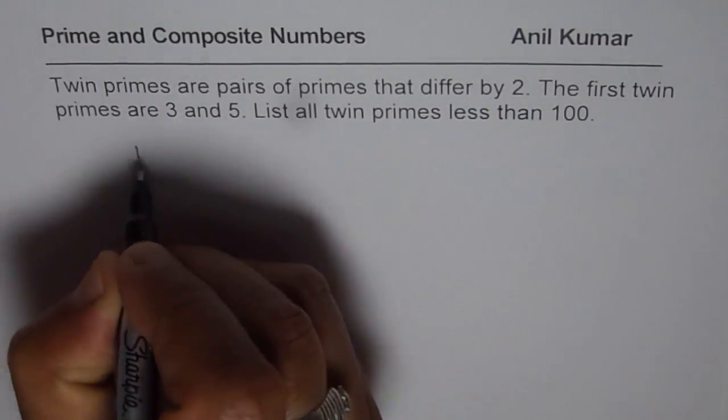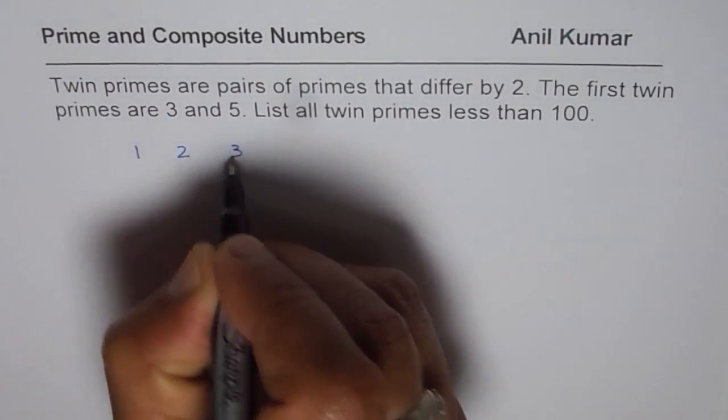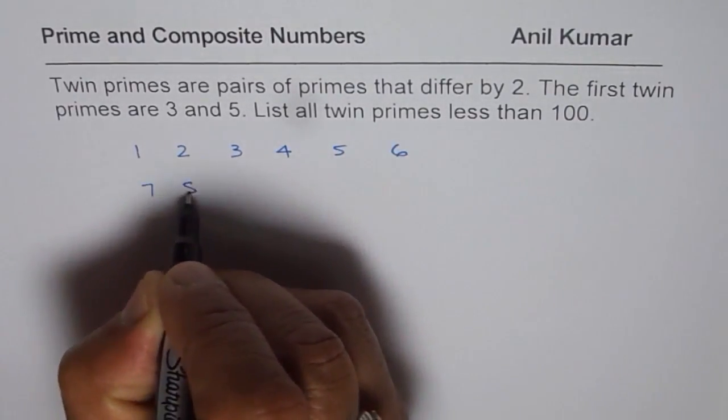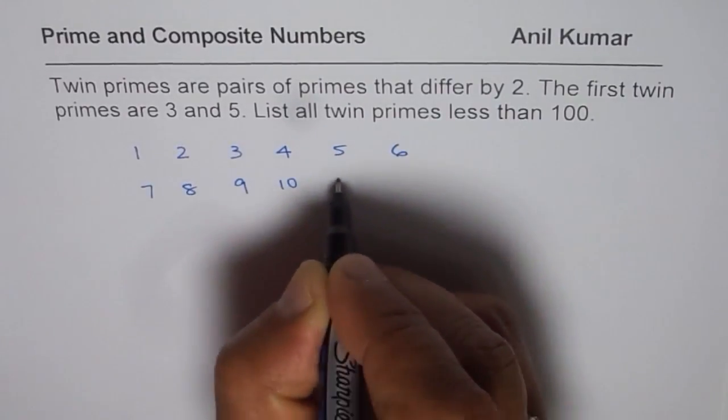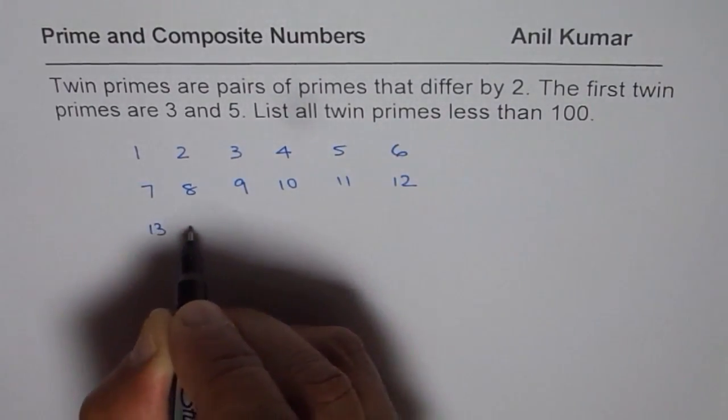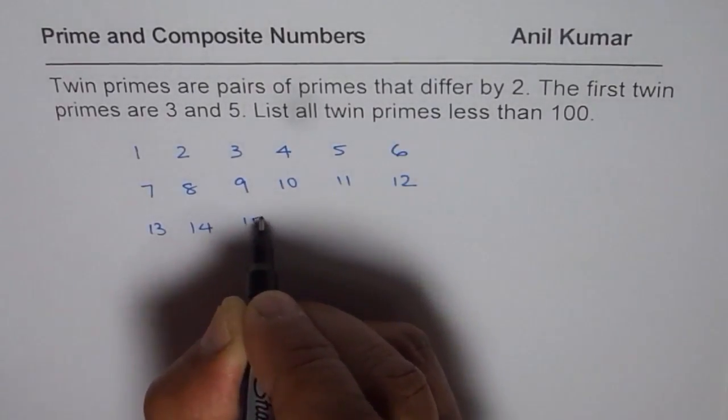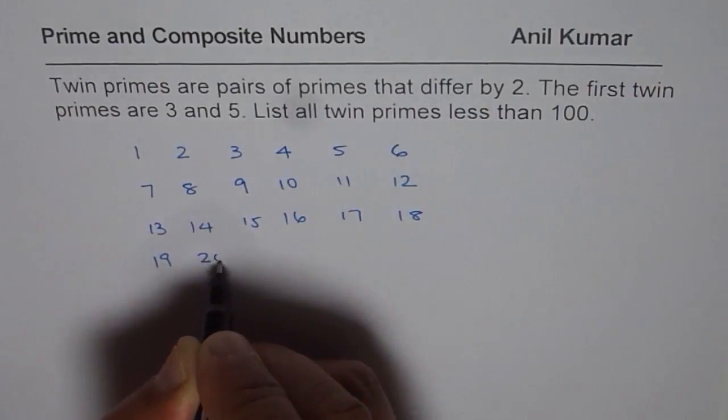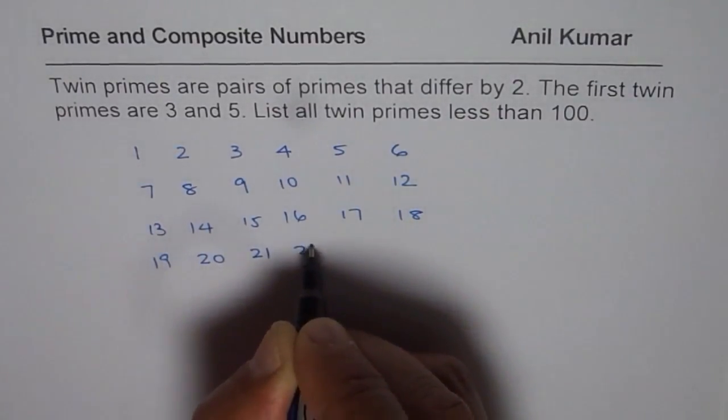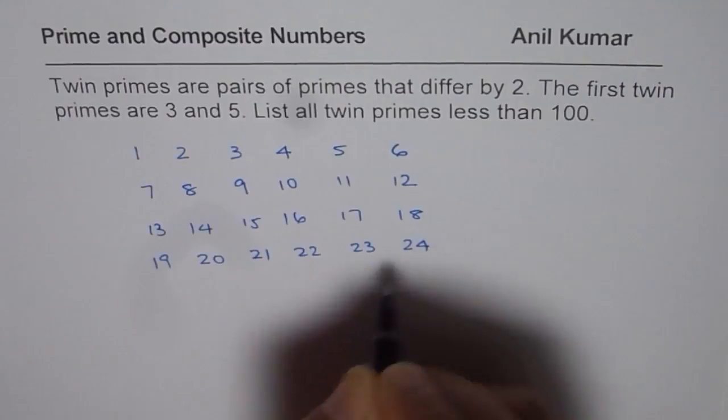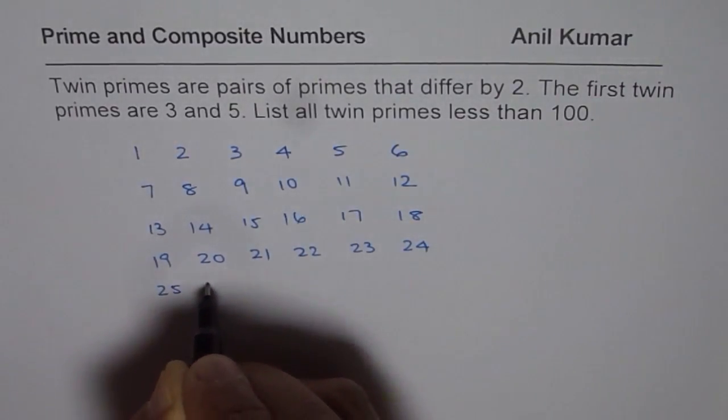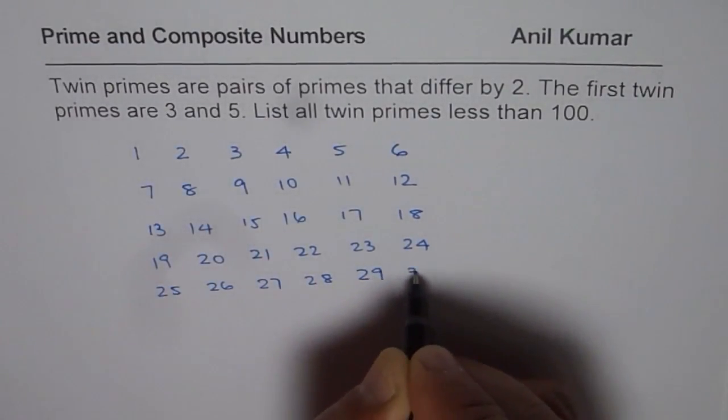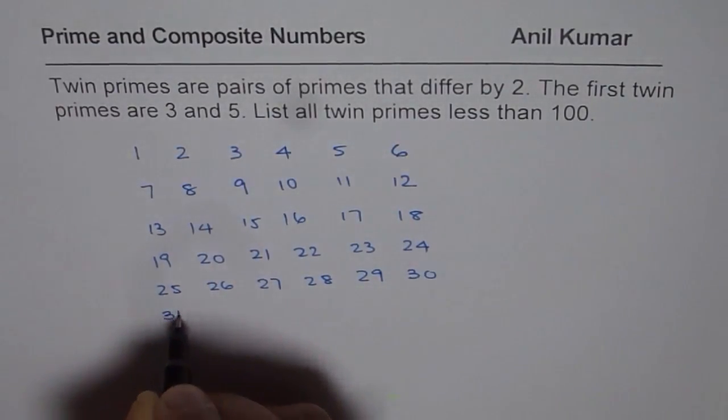Write down numbers like this: 1, 2, 3, 4, 5, 6, 7, 8, 9, 10, 11, 12, 13, 14, 15, 16, 17, 18, 19, 20, 21, 22, 23, 24, 25, 26, 27, 28, 29, 30, and continue this till 100.